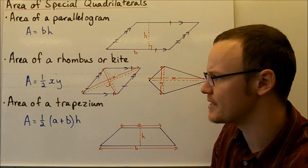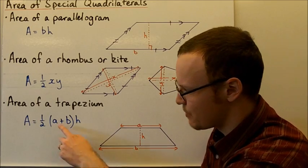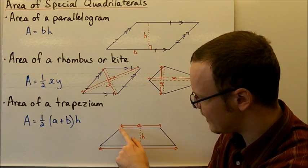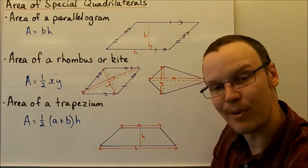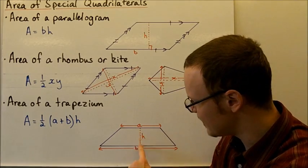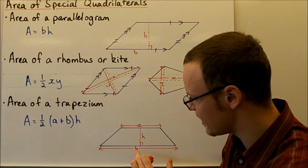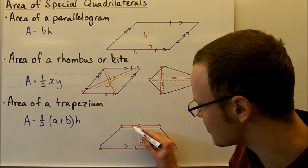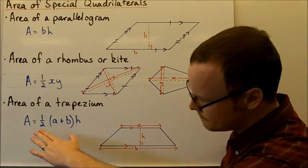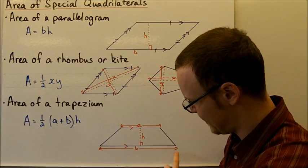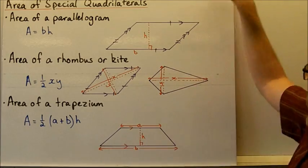Lastly, the area of a trapezium — or trapezoid, as it can be called — is a half of (A plus B) in brackets, multiplied by H. A is the length along the top of the trapezium and B is the length along the bottom. The height is the perpendicular line between the side labelled B and the side labelled A, and these two sides A and B are parallel. So it's a half times (A plus B), adding those together first, then multiplying by the perpendicular height.